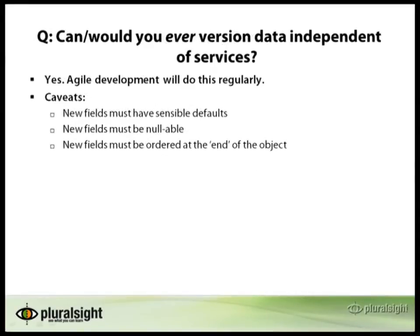One question I sometimes get asked is: would I ever version data independent of services? And the answer is yes. If I'm doing agile development, I'm going to do this all the time. If I'm shipping every one or two weeks or even every month, I may allow my data to version independent of my services. However, if I'm delivering implementations out to a client and saying this is something shippable, in that case I'm going to actually version my data objects.